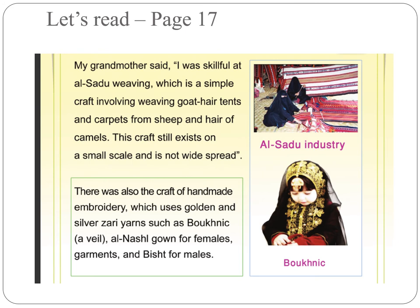Look at this lovely girl in a beautiful outfit. We are going to read page number 17: 'My grandmother said I was skillful at Al-Sadhu weaving, which is a simple craft involving weaving goat hair tents and carpets from sheep hair and camel hair. This craft still exists on a small scale and is not widespread.' There was also the craft of handmade embroidery, which uses golden and silver Zari yarns, such as the Bokhnik veil, Al-Nashal gown for females, and Bisht for males.